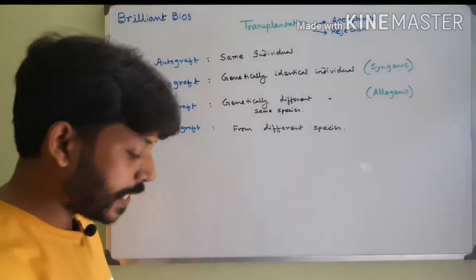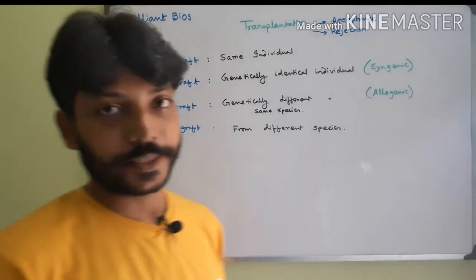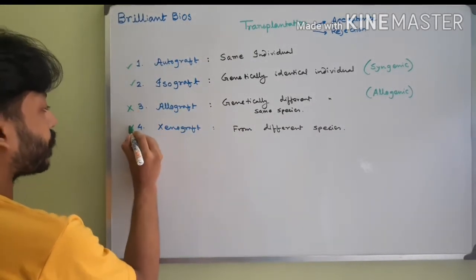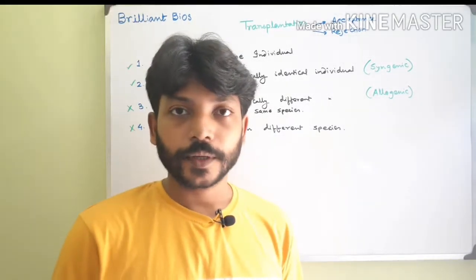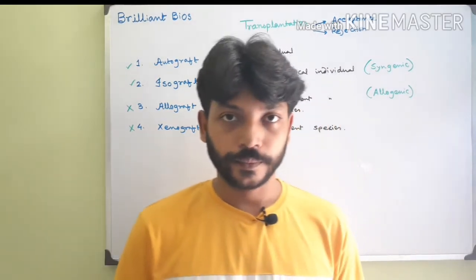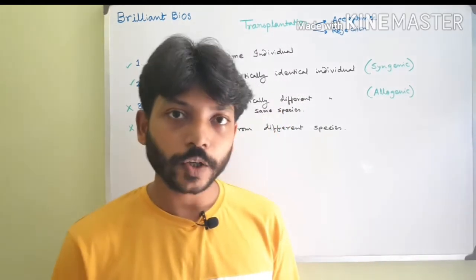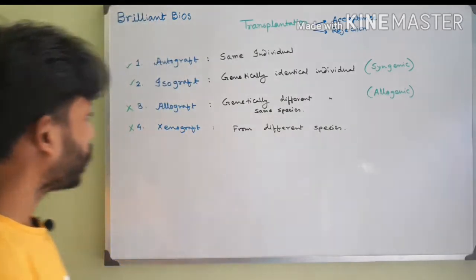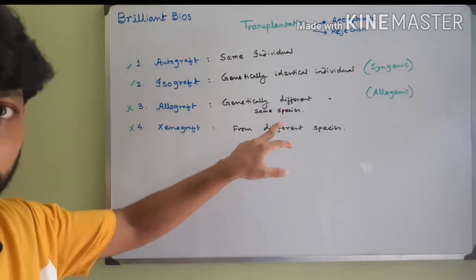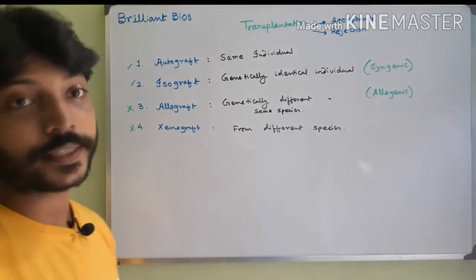In general, autograft and isograft are accepted, but allograft and xenograft are generally rejected. The rate of rejection depends on the tissue — for example, skin is rejected faster than heart and kidney. So depending on the tissue, the rejection rate can vary.